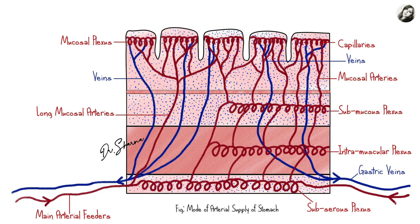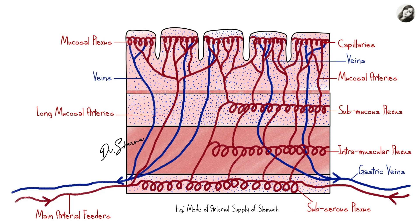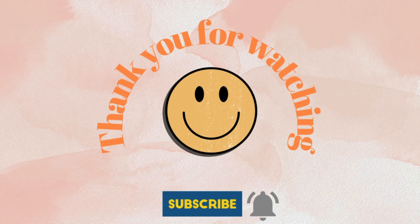So in this video I have described the mode of arterial supply of the stomach, explained why gastric ulcers are more common on the lesser curvature than any other area of the stomach, and showed how arteriovenous anastomosis may play a role in ulcer formation in cases of persistent hyperacidity. You will find all this information in AK Datta's Essentials of Human Anatomy, thorax and abdomen portion. If you found this video helpful, please like, share, and subscribe to my channel. Thank you for watching and I'll see you in my next video — take care and goodbye.